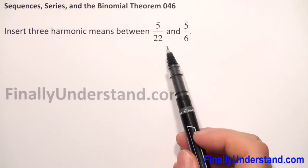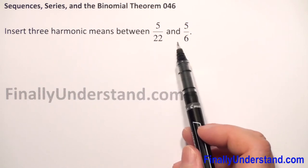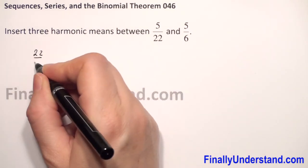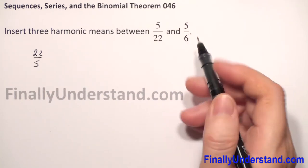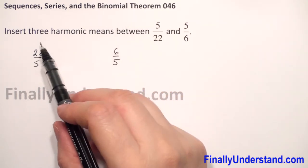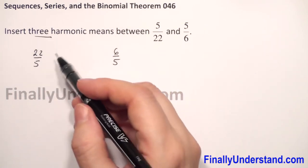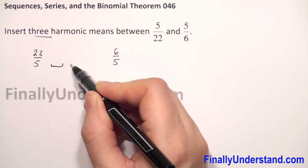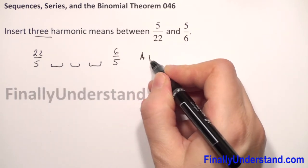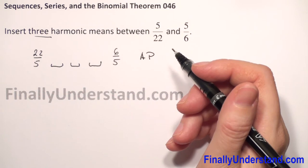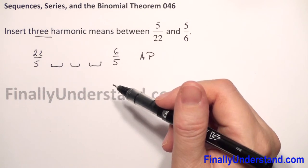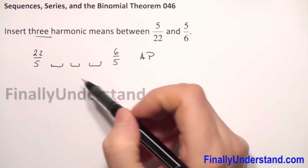First we take the reciprocal of our two terms. The first term 5 over 22 becomes 22 over 5, and the last term 5 over 6 becomes 6 over 5. We need to find three harmonic means, so we must insert three terms between these two. From the definition, this is an arithmetic progression.